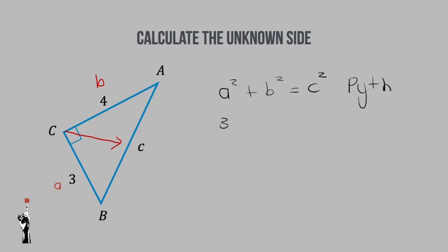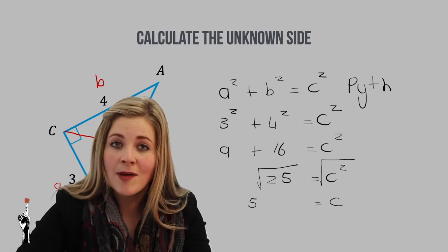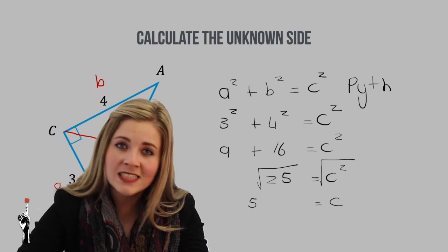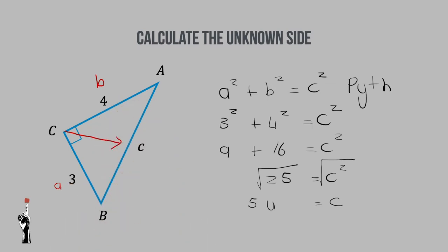A is 3, so we write 3 squared plus 4 squared equals C squared. 3 squared is 9, plus 4 squared which is 16, equals C squared — giving a total of 25. But we don't want C squared; we want C. So we take the square root of both sides: the square root of 25 gives C equals 5. Always remember to write your units — since no units were given, we write 5 units.